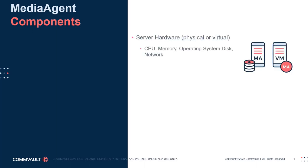The first physical component of a media agent is the compute layer. Although typically deployed on physical hardware, an increasing number of media agents are deployed as virtual instances, either on-premises or in the cloud. Media agents typically generate significant I/O, so careful planning of virtual resources is required.